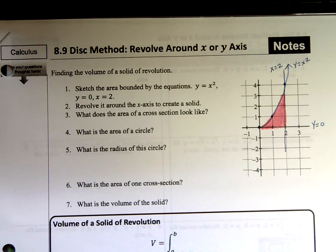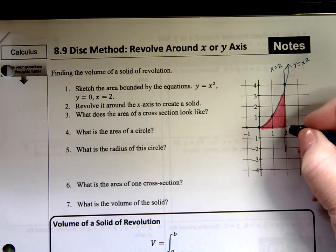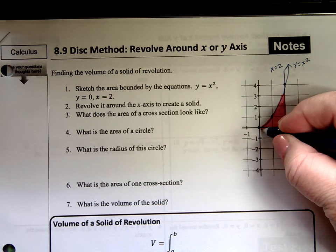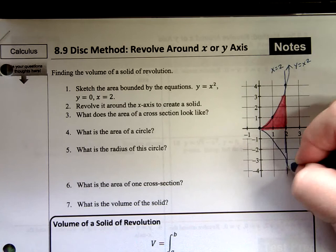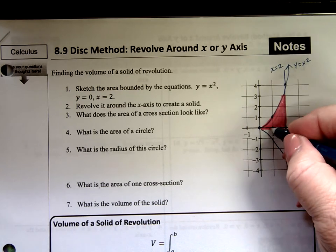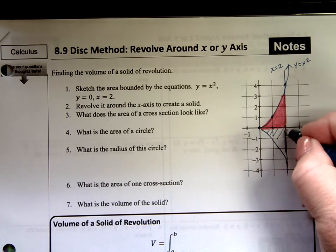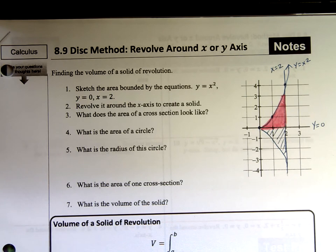Revolve it around the x-axis to create a solid. So in other words, you're taking this thing and you're revolving it across the x-axis. It's going to create a mirror image like this. Now, I'm not going to color it. I'm going to actually just slice it in like that so that you know that what we've done is we've revolved it.